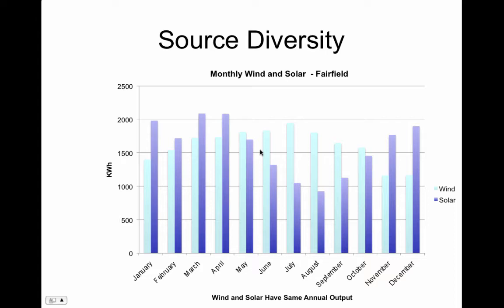One of the beauties of wind is when you combine it with solar. Here's a graph of Fairfield — I designed two systems that had the same annual output. The wind system and the solar system would have the same output over the period of a year, but with different variation month to month. In the winter the wind energy really shines, particularly in December, which is kind of the worst month for solar. But then the worst months for wind, solar really shines. So you put the two of them together and you get a really nice steady source of power.